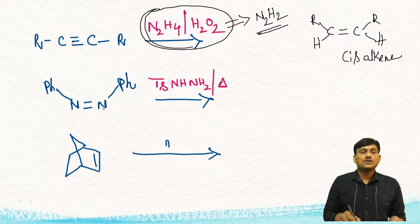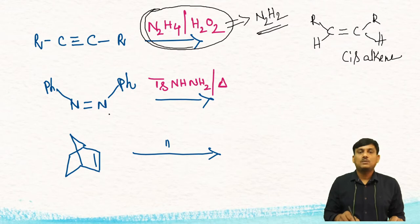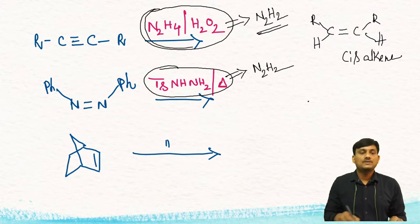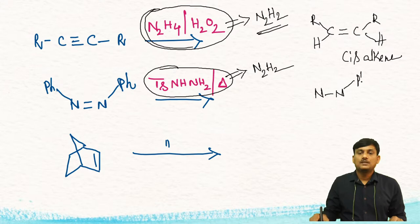When you treat an azo compound (N=N), there is also an addition of two hydrogens on the same side of the N=N bond. In this case there is an in-situ generation of diazene — when you decompose tosyl hydrazine there is a formation of diazene. This diazene reduces the azo compound, and there is a syn addition of two hydrogens.